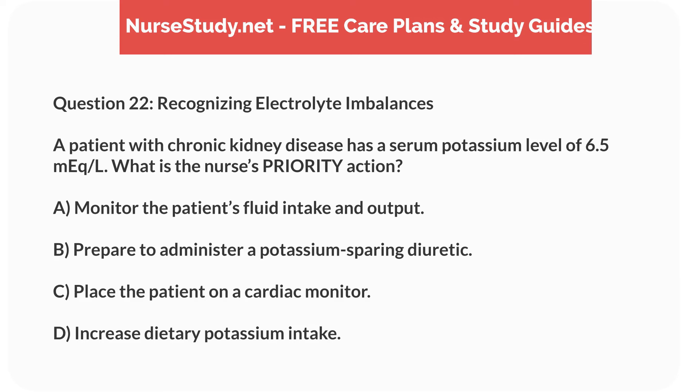Question 22. Recognizing Electrolyte Imbalances. A patient with chronic kidney disease has a serum potassium level of 6.5 mEq per litre. What is the nurse's priority action? A. Monitor the patient's fluid intake and output. B. Prepare to administer a potassium-sparing diuretic. C. Place the patient on a cardiac monitor. D. Increase dietary potassium intake.